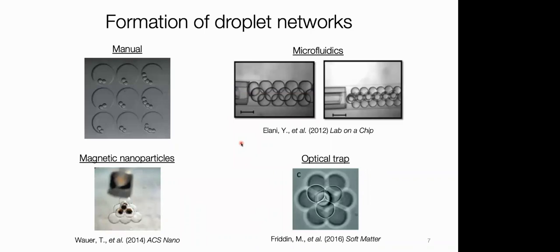There are a couple of different ways of making droplet networks. Most of my work involves making them either manually or, as I'll show next, with a 3D printer. You can also use microfluidics — this is from the Mast group — and there's another example from Hagen's lab where particles are used to move and assemble droplets. There are all different ways of making these droplet networks.